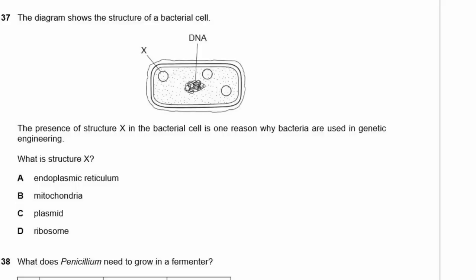Question 37: The diagram shows a bacterial cell. Structure X is used in genetic engineering. Structure X is a plasmid — a small ring of DNA. Bacteria don't have endoplasmic reticulum or mitochondria. While bacteria have ribosomes, the reason they're used in genetic engineering is the plasmids — it's easy to cut and insert DNA into them.